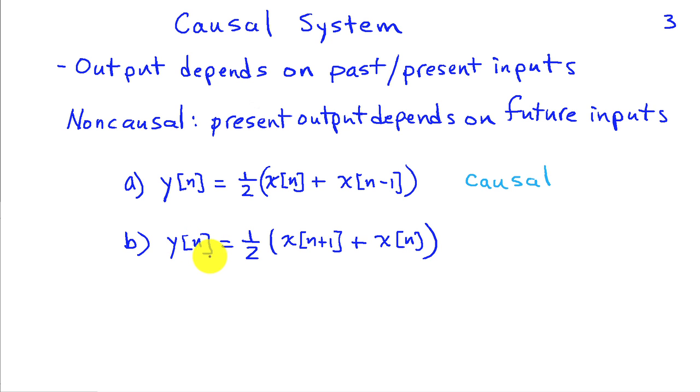In case b, the output at time n is the average of the input at the next time instant plus the input at the current time instant. This system requires knowledge of the data or the input one sample ahead, and hence it's not causal. It requires knowledge of the future.